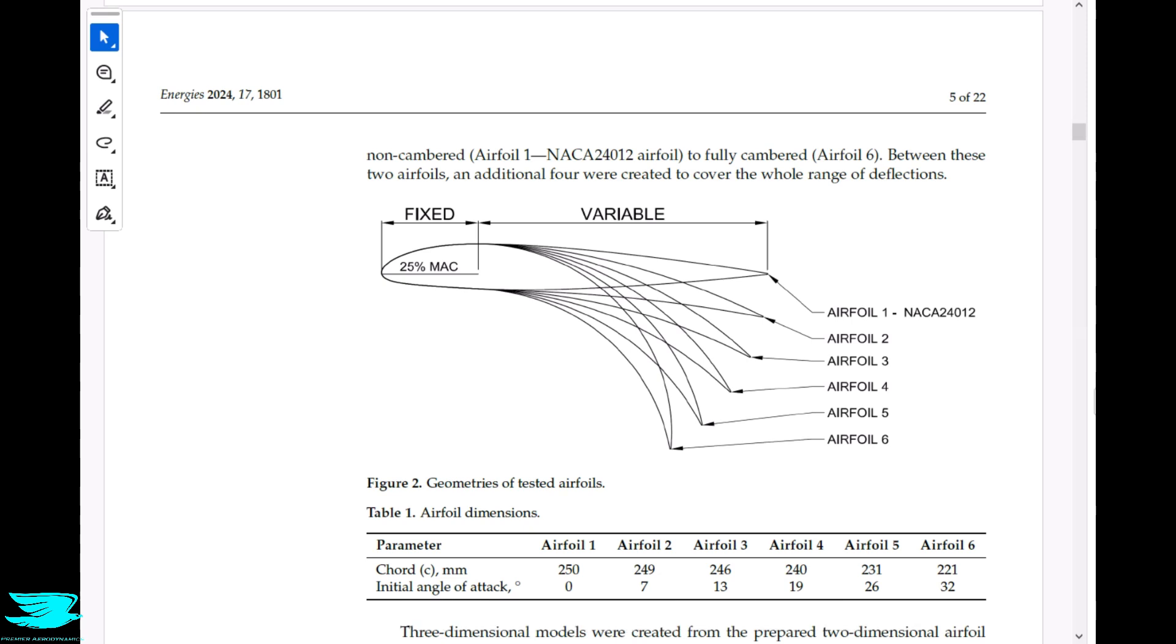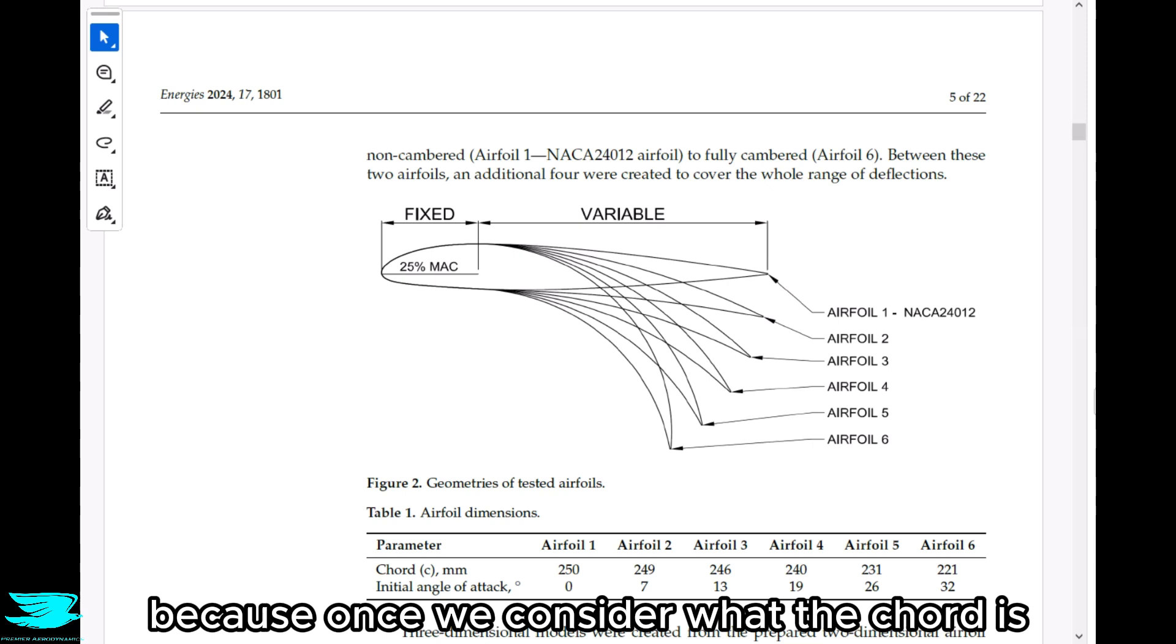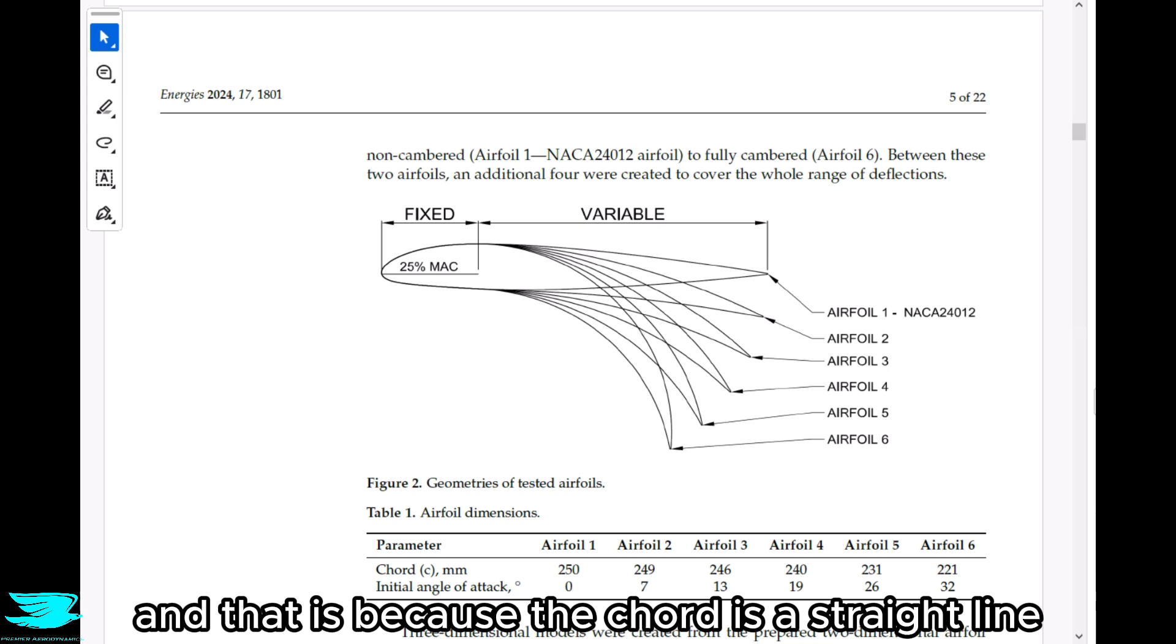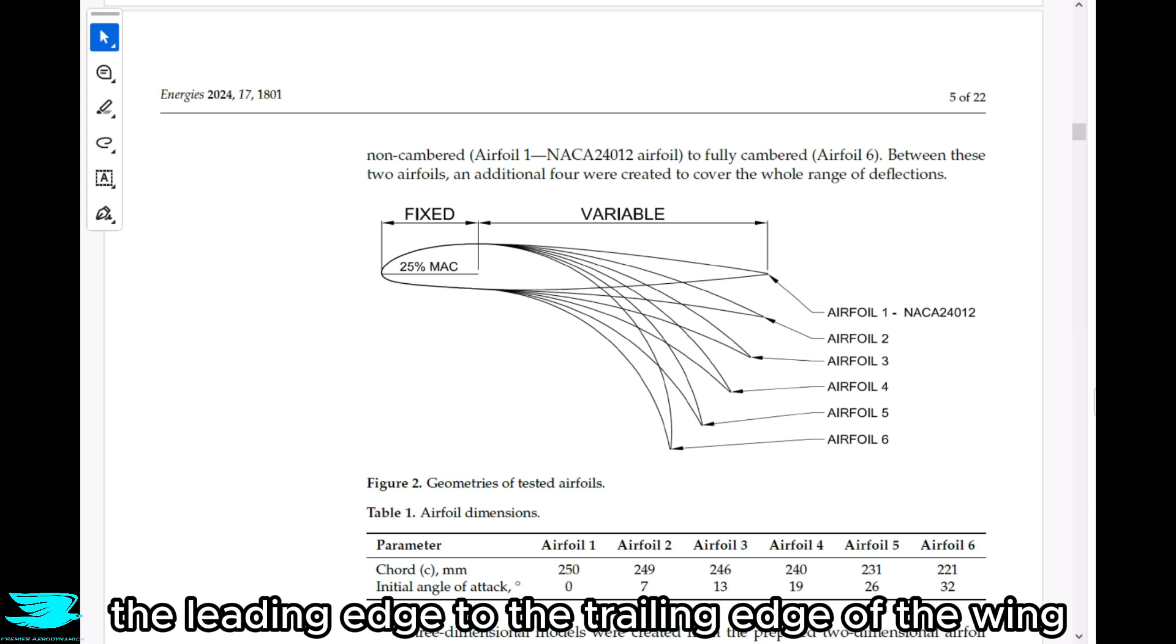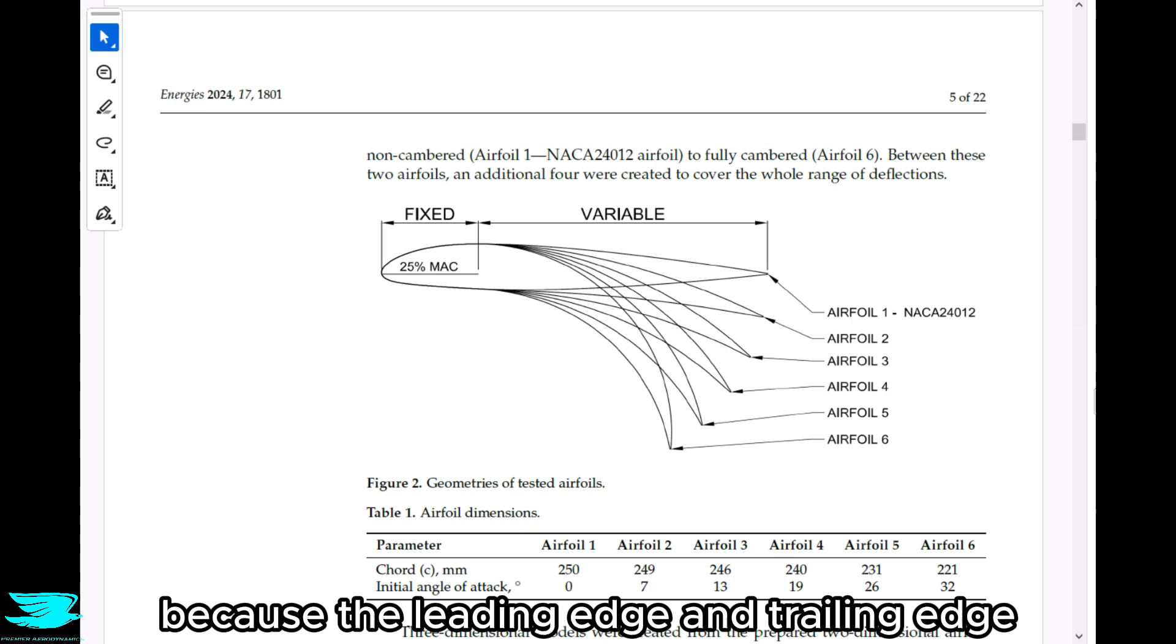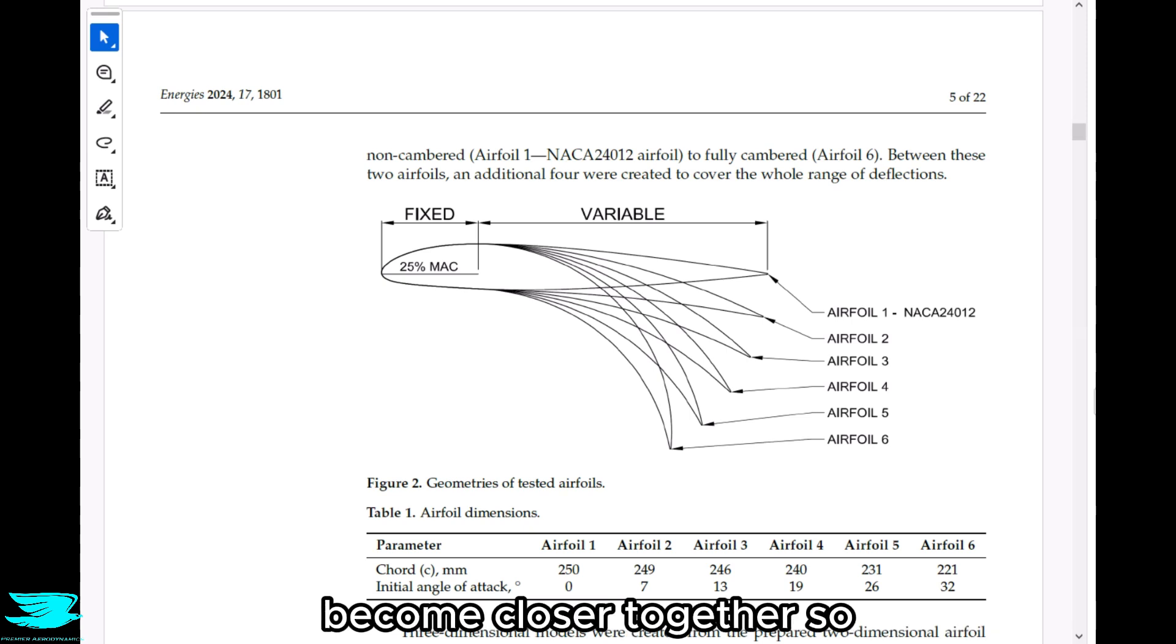And the chord, as we'll note here, doesn't stay the same between airfoil one and airfoil six, which might seem very odd at first. I mean, it's the exact same wing. So the chord should stay the same, but actually no, because once we consider what the chord is, the definition of it, it now makes sense why the chord will change. And that is because the chord is a straight line connecting the leading edge to the trailing edge of the wing. So if you start curving the wing, that line will become shorter because the leading edge and trailing edge become closer together. So the fact that the chord is reducing in length now makes a lot of sense here. In terms of how much it shrinks, it's over 10% for airfoil six, which is quite a bit.